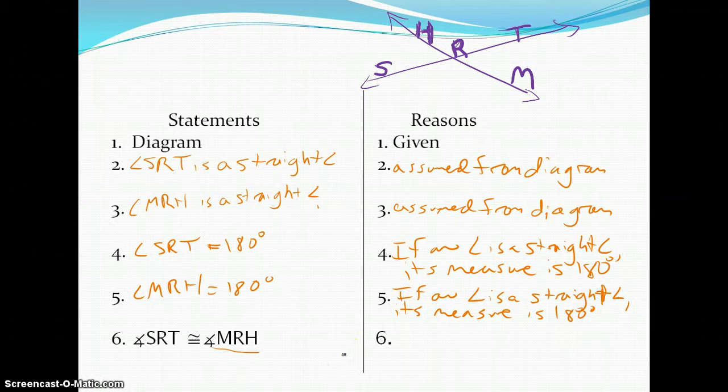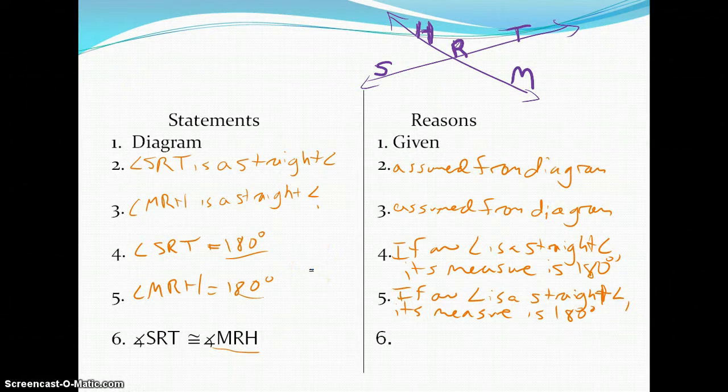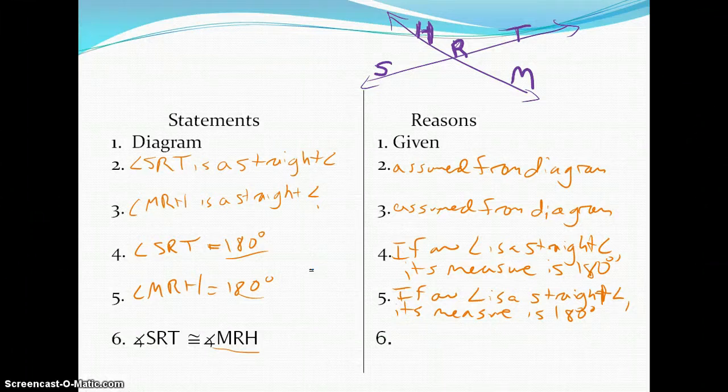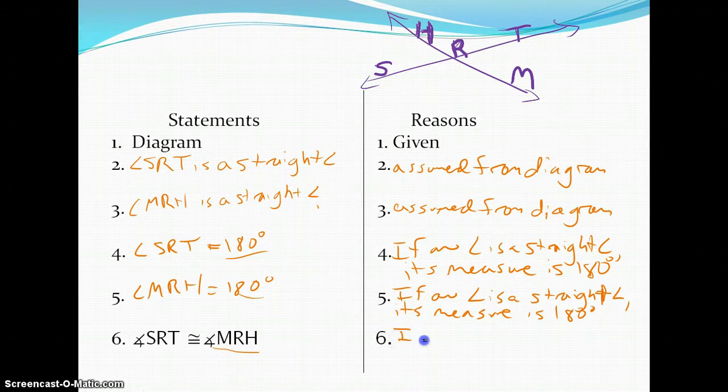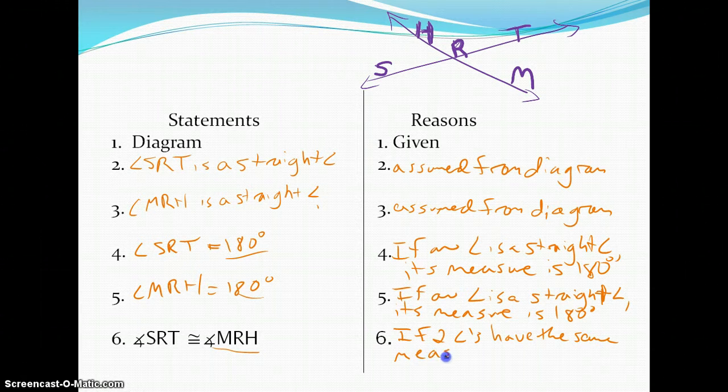I'm finally at my prove statement. I've got two angles that are both 180 degrees. I know from congruence that if two angles have the same measure, then they are congruent. That's going to be my last reason. If two angles have the same measure, then they are congruent.